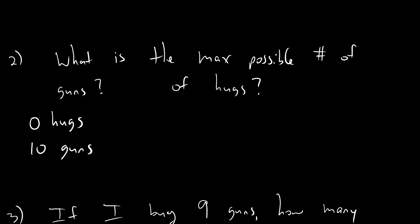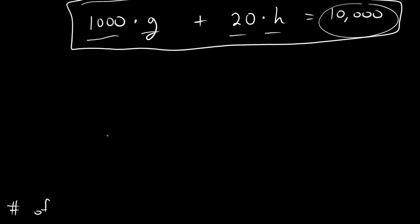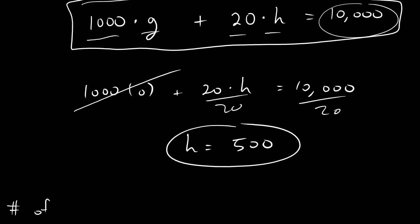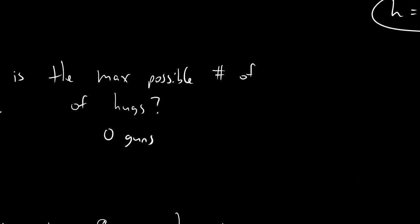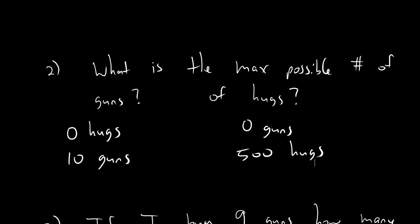Same idea for hugs. The maximum number of hugs happens when we have 0 guns. So we go back up here. We look at this original equation. We've got 0 guns. And so, this is what happens when we plug in 0 for guns. That term becomes 0. Now, we divide both sides by 20. And we get hugs equals 500. So, the maximum number of hugs happens when we don't spend any money on guns. And in that case, we get 500 hugs. That's pretty cool, I guess. And then, all we're doing is using the equation we came up with to answer the question.